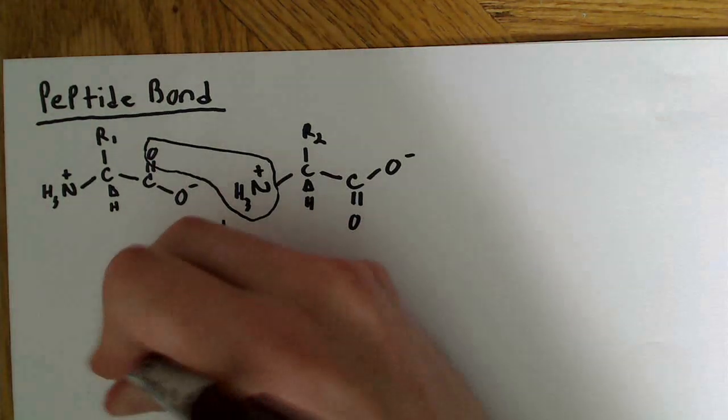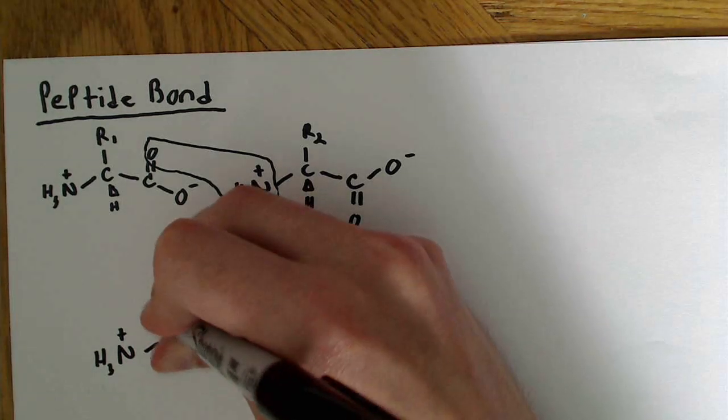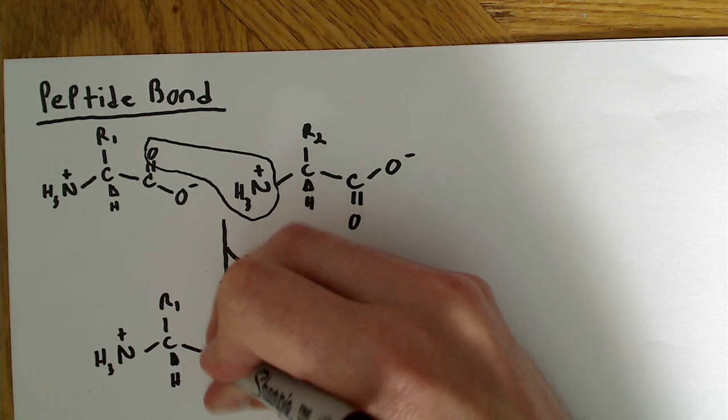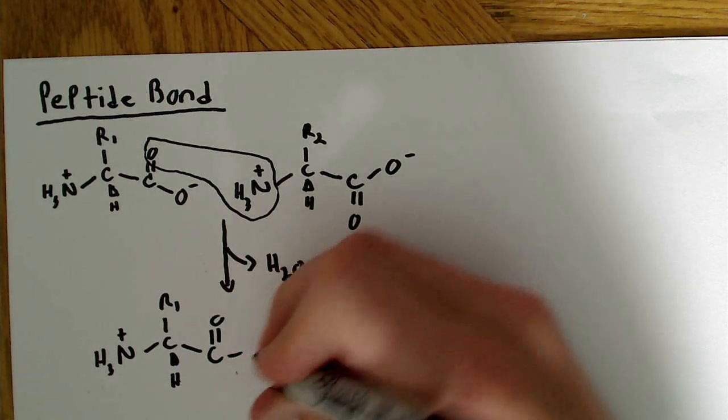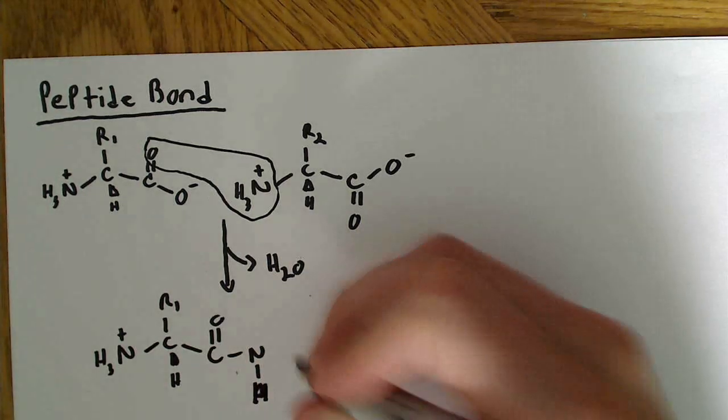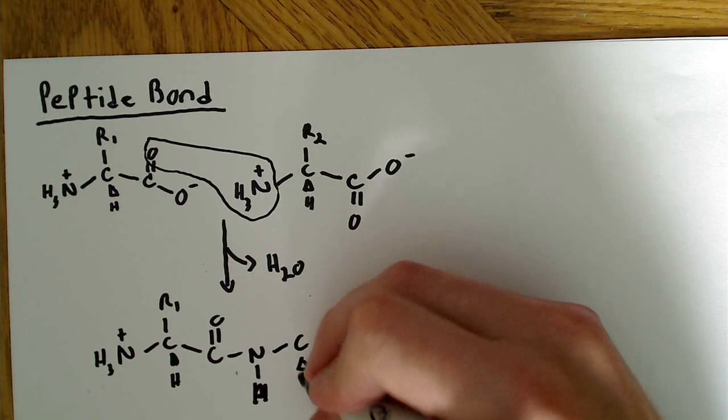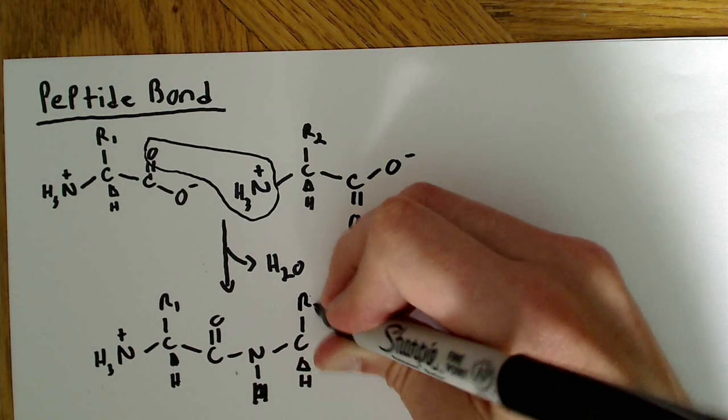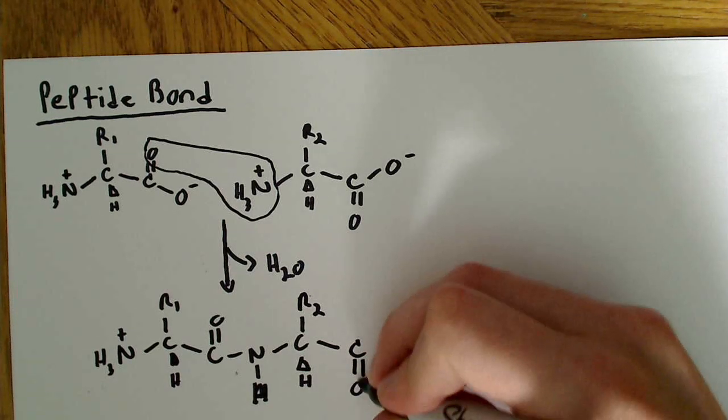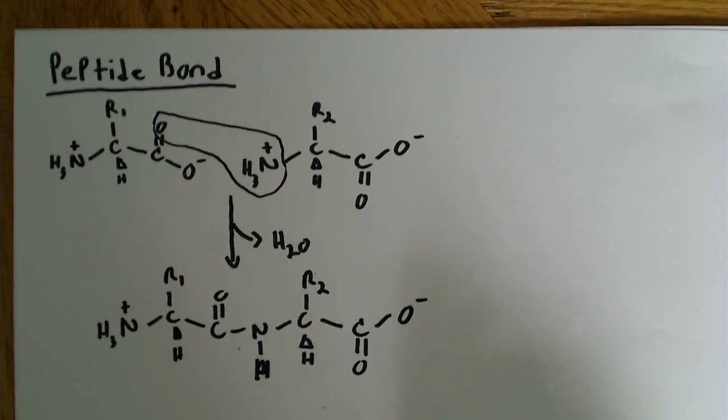Then we can draw NH3 with a positive charge, C, R1, hydrogen, carbon, double bond, O. And this has the NH here. This has the NH here. Another C. And H. This is our R2. This is our C, double bond, O. And our O minus. We formed the peptide bond here.